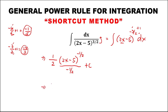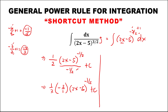To simplify, we have 1 over 2 times the reciprocal of negative 1 half, which is negative 2 over 1, then times (2x minus 5) to the power negative 1 half, plus C. Then 1 half times negative 1 half: we can cancel, this is 1, and positive 1 times negative 1, so this is negative 1, then times (2x minus 5) to the power negative 1 half, plus C.